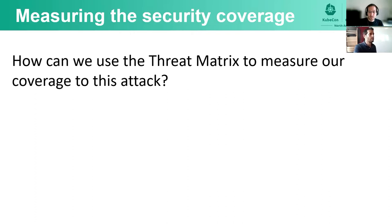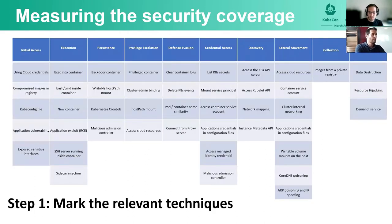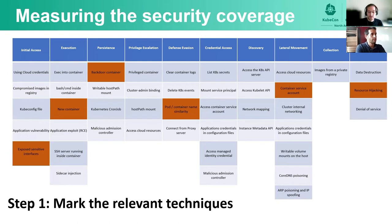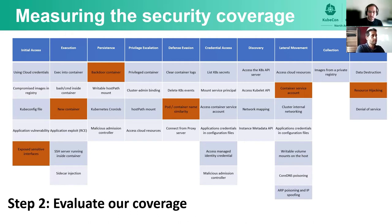So we saw an example of an attack. How can we now use the threat matrix to measure our coverage against this attack? Step one is to mark the relevant techniques. Here in red, we mark the relevant techniques for this attack. Attackers used exposed sensitive interfaces — the Kubeflow dashboard — so this is the initial access technique. The attackers used containers for execution and persistence. They used legitimate names for hiding their activity, so this is the defense evasion technique of pod or container name similarity. They leveraged the pipeline controller permissions for deploying a new container — this is the container service account technique. And the impact is resource hijacking, which is the cryptocurrency mining.